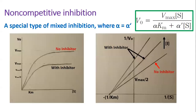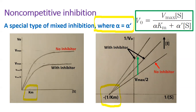If an inhibitor binds to the free enzyme and to the enzyme-substrate complex with equal ease, we deal with a special type of mixed inhibition called non-competitive. The alpha and alpha-prime factors are equal. On the Michaelis-Menten plot, you can see that the amount of substrate necessary to reach half of V-maximal is the same with and without inhibition, meaning this type of inhibition does not change the Michaelis constant. On the Lineweaver-Burk plot, the slope and the y-intercept increase, indicating lower V-maximal, but the x-intercept is the same — so the Michaelis constant is unchanged.